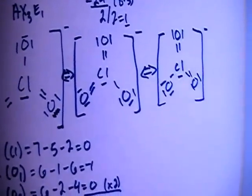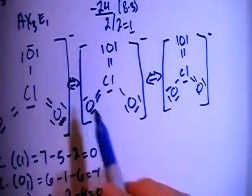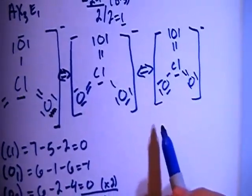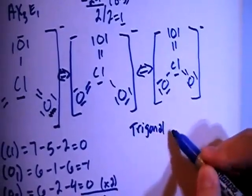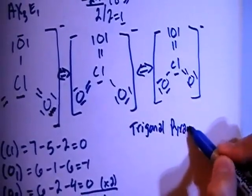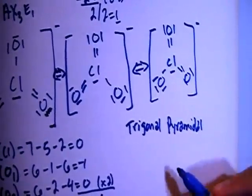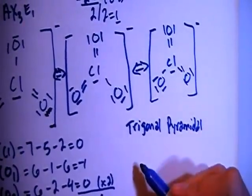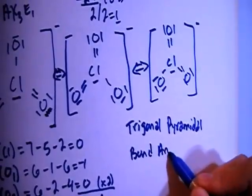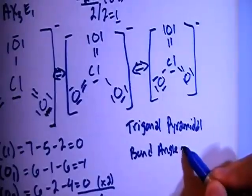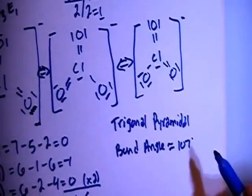And now let's talk about the shape real quick. Being an AX3E1 and having this type of structure, it's going to have a trigonal pyramidal shape. And with this kind of shape, the trigonal pyramidal shape, the bond angle is going to be approximately equal to 107 degrees.